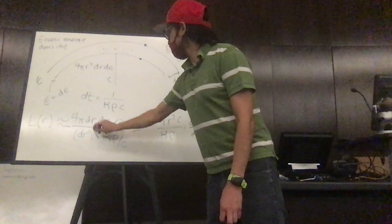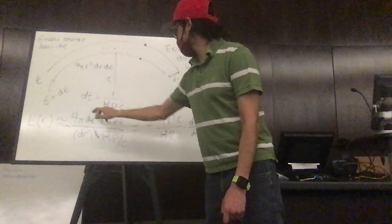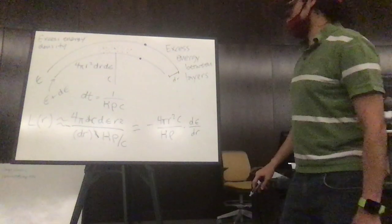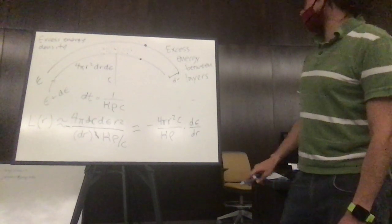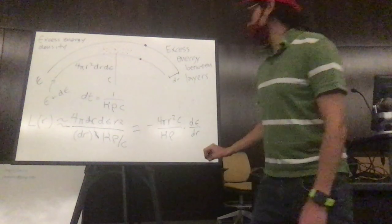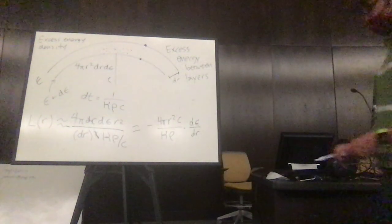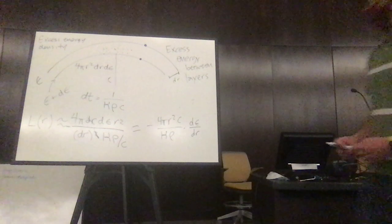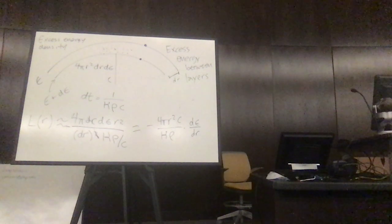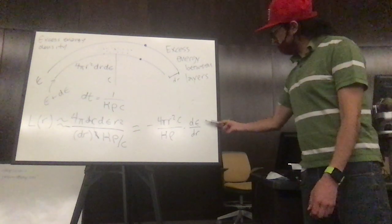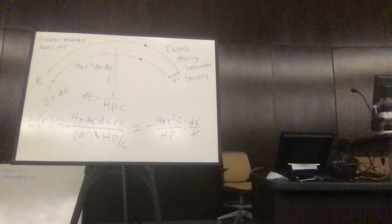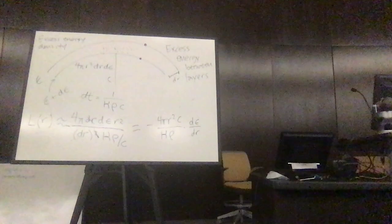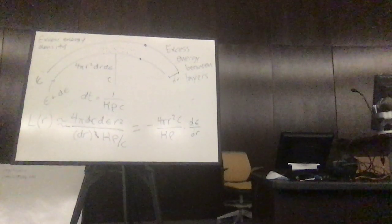We cancel out one of these drs with this one. The c will move up here, and then we get our dE/dr. This is how the energy density changes as a function of the radius. And we're very close to being done with these equations.